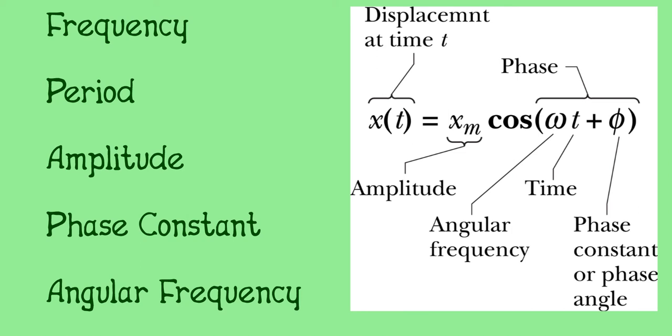Lastly, the angular frequency, or ω, is used in our equation rather than plain old frequency. The reason is because it's inside the cosine argument, so we need something that's in radians per second rather than hertz. The angular frequency can be related to the regular frequency by the fact that ω is 2π times the frequency of our object.